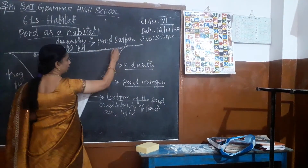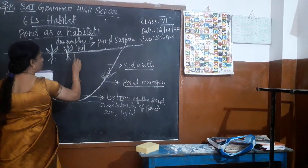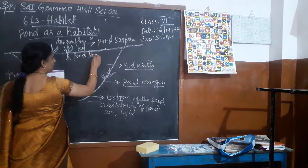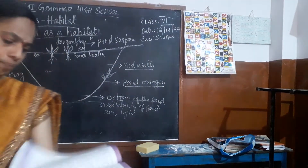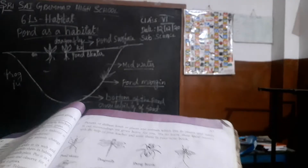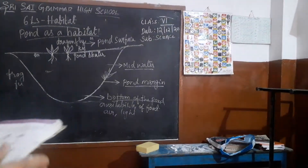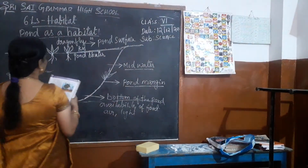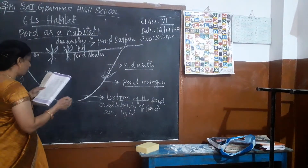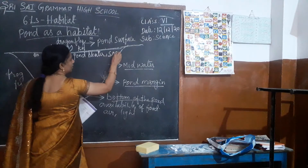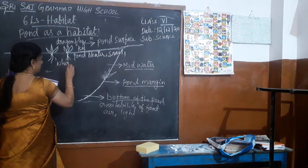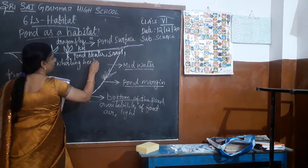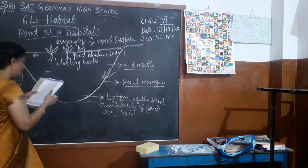On the surface, what type of organisms are living? We can see the pond skater on the surface. You can see in page number 63. We can see some of the insects — pond skater, snail, and whirligig beetle — all darting on the surface of the pond.